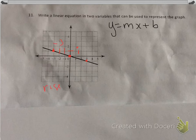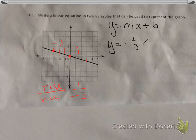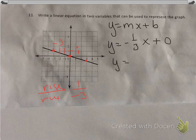So if you remember, rise over run. That's one over negative three. So it looks like my slope is going to be negative one-third. So y equals negative one-third x. And don't forget, my y-intercept is zero. So my equation is going to be y equals negative one-third x.